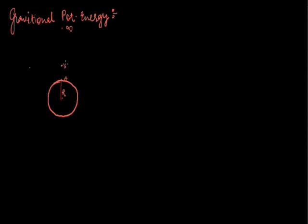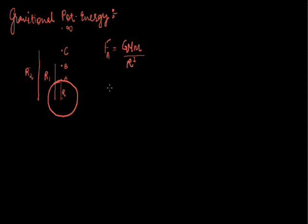Consider any arbitrary point B at a distance r₁ from the center, and consider any arbitrary point C whose distance from the center of Earth is r₂. Now the force acting on a body of small mass m will be GMm divided by r squared. If we have taken this body up to point B, the force acting will be GMm divided by r₁ squared. Now let us talk about the average force — it will be the geometric mean of the forces acting at A and B.